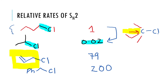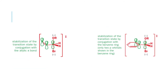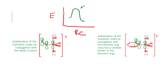Even when I move from allyl chloride to benzyl chloride, the rate goes up even further from 79 to 200. In order to understand this, we invoke the concept of orbital interaction. If I look at the energy and reaction coordinate and draw the energy profile, anything that stabilizes the transition state leads to acceleration in rate and is going to be favored, while anything that destabilizes the transition state results in decreased rate.